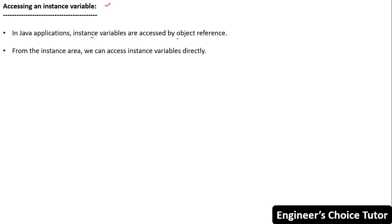Now let's discuss accessing an instance variable. In a Java application, instance variables are accessed by using an object reference. From the instance area we can access instance variables directly, but from the static area we cannot access them directly — we have to use an object reference. The syntax is: object_reference.variable_name.